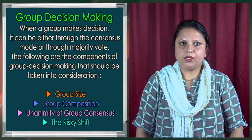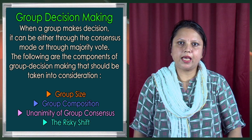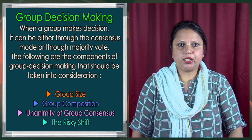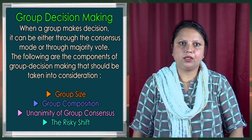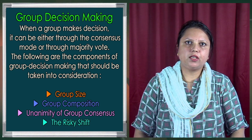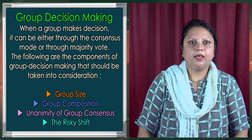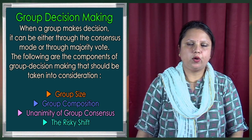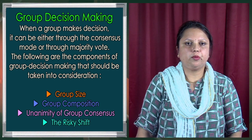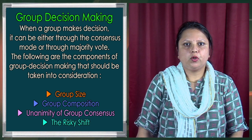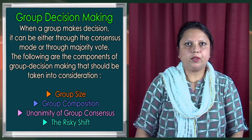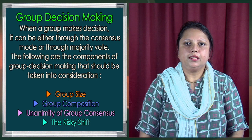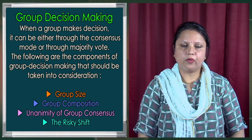Now we will discuss about group decision making. When a group makes a decision, it can be either through the consensus mode or through majority vote. The components of group decision making that should be taken into consideration include: group size, which influences group decision making; group composition, such as how many members there are and their roles; anonymity of group consensus, meaning whether all persons agreed to a particular decision or only a majority; and the risky shift, meaning the way the decision will influence others.